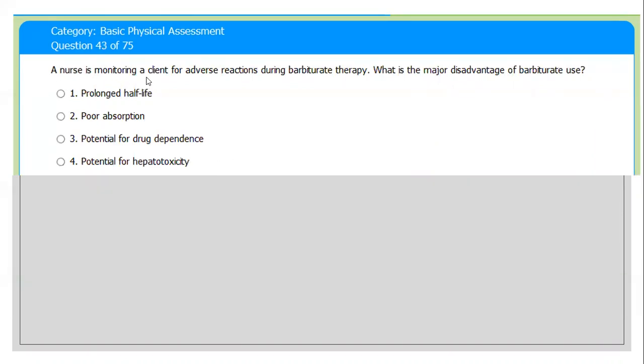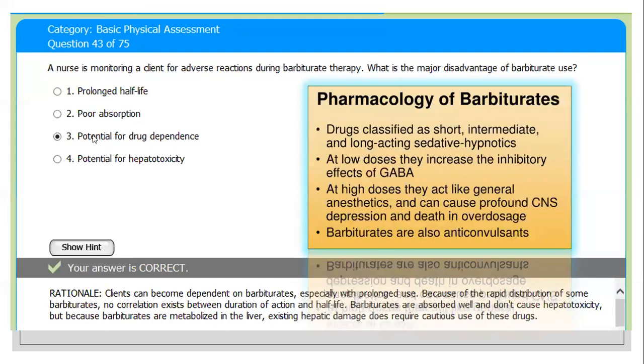Next question. A nurse is monitoring a client for adverse reactions during barbiturate therapy. What are the major disadvantages? Number one: prolonged half-life. Number two: poor absorption. Number three: potential for drug dependency. Number four: potential for hepatotoxicity. The examiner is asking this question about the barbiturate. The correct answer here: patient has a chance to develop potential for drug dependency.